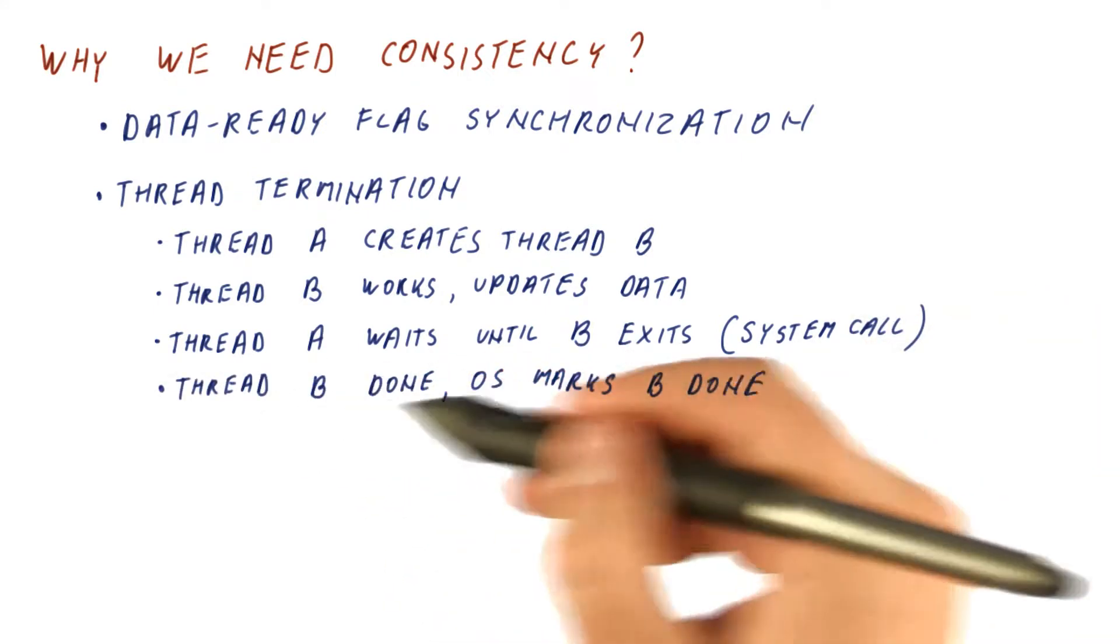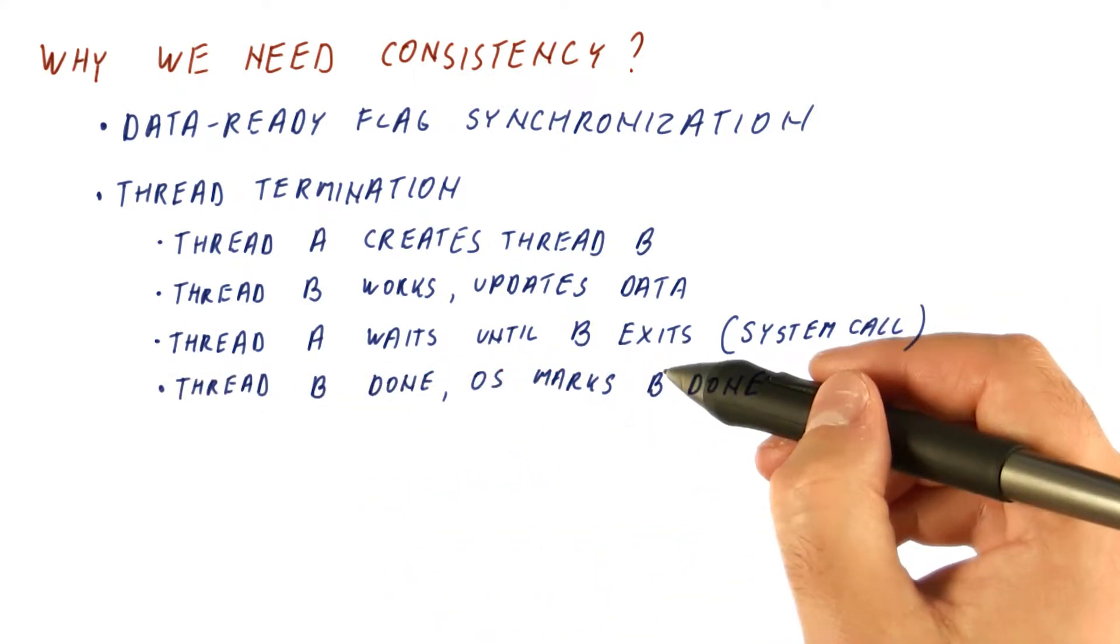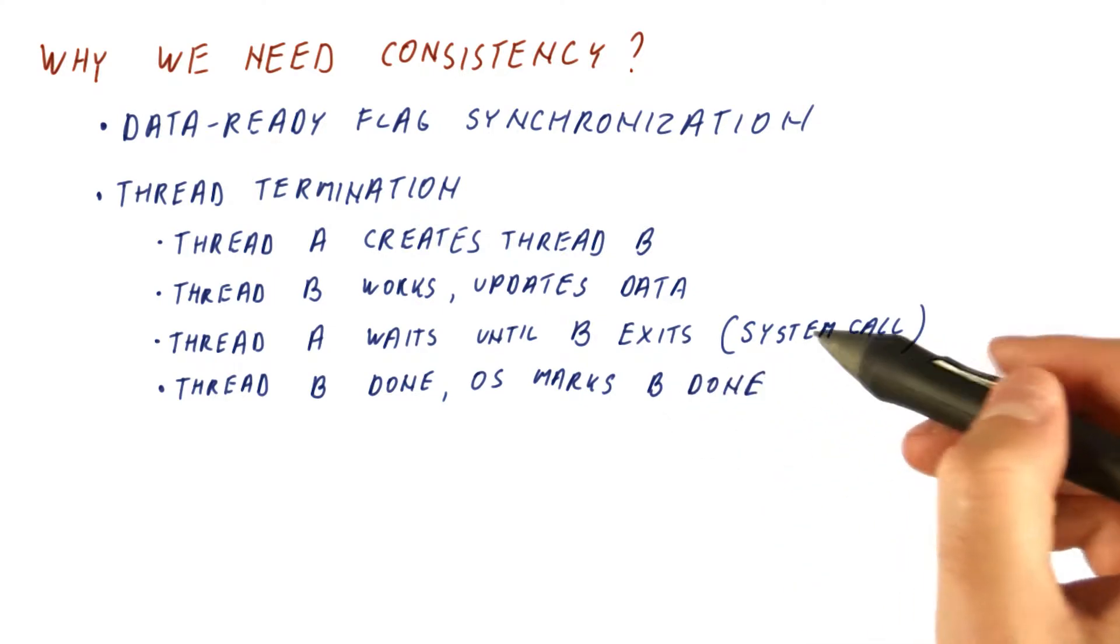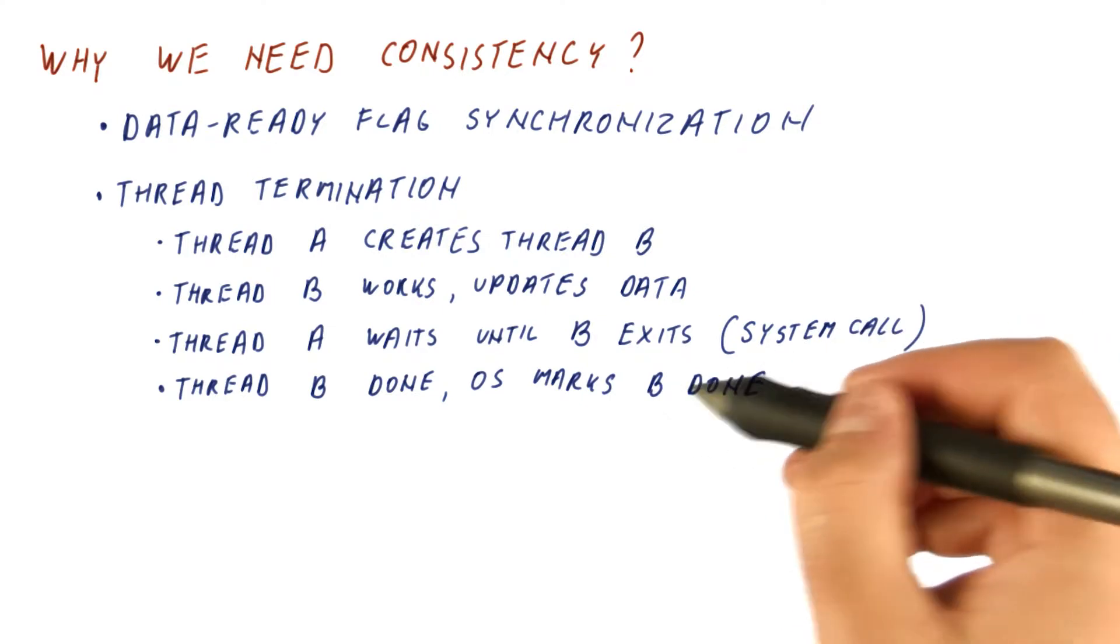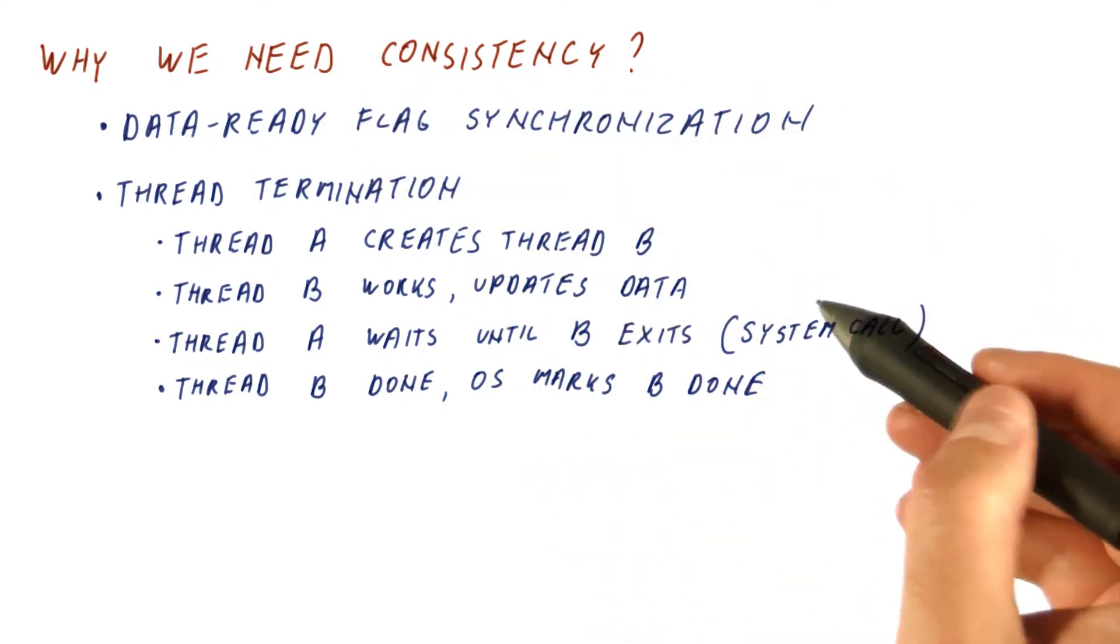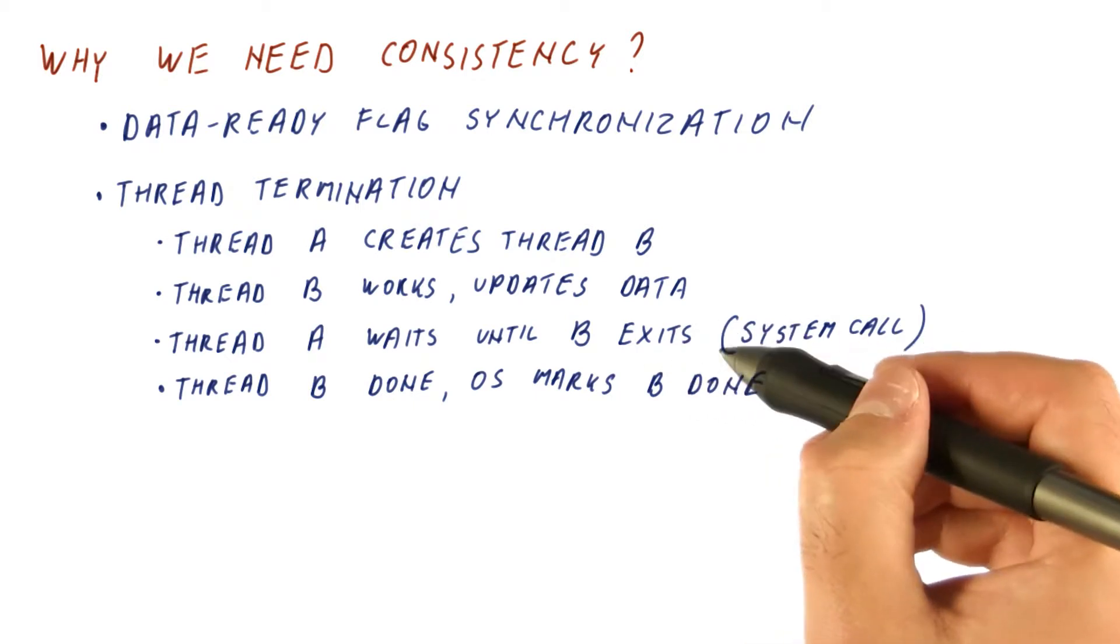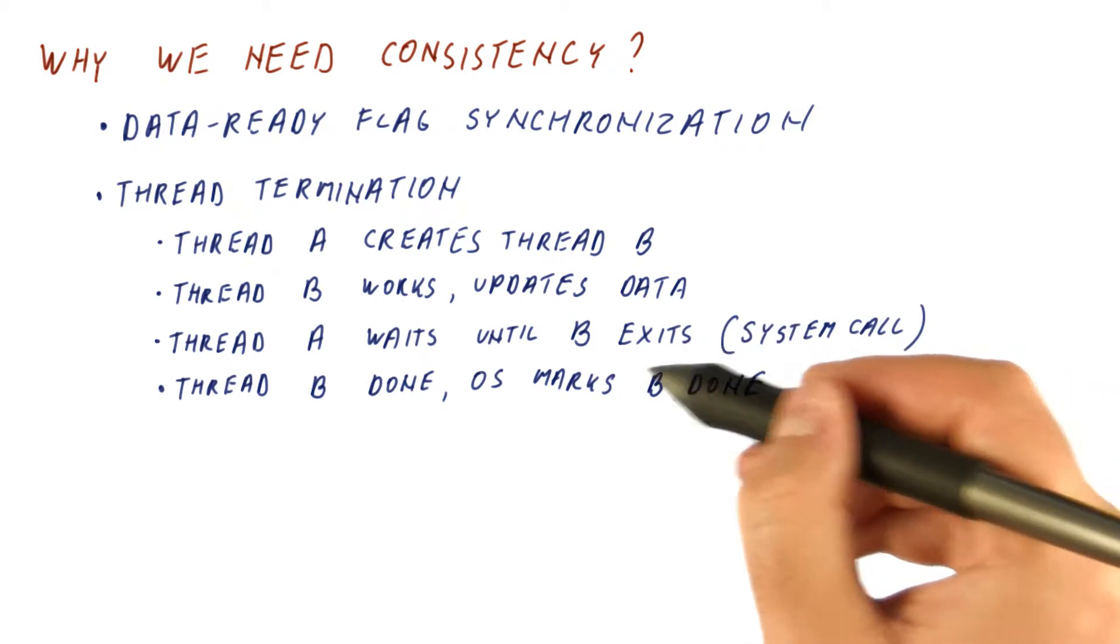And then when thread B is done, the operating system will mark that B is done. Here we have a very similar situation inside the operating system, which is the check for B exiting might be branch predicted and then confirmed,